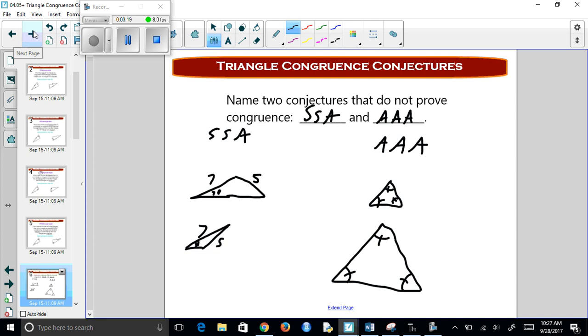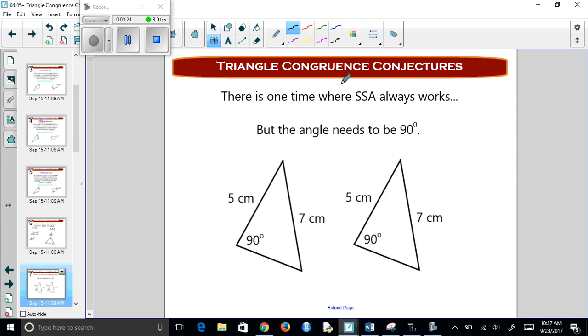Alright, so now we have to look at one last one, where side-side-angle doesn't work unless it's 90 degrees. So if this is 90 degrees, then we could just use Pythagorean theorem to get this third side, and so it's really a side-side-side situation.